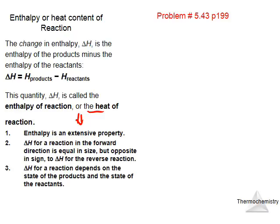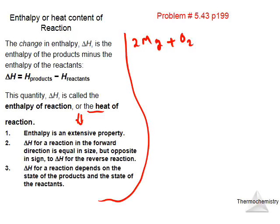Let's go over problem 43A and B. The reaction given is: 2Mg + O2 → 2MgO, and delta H is minus 1204 kilojoules. Because it's negative, it is an exothermic reaction.